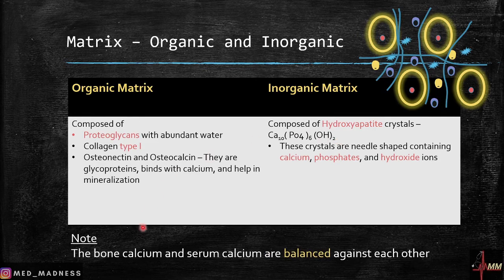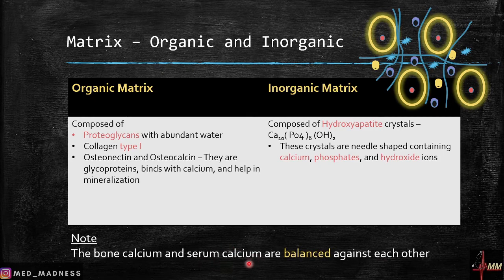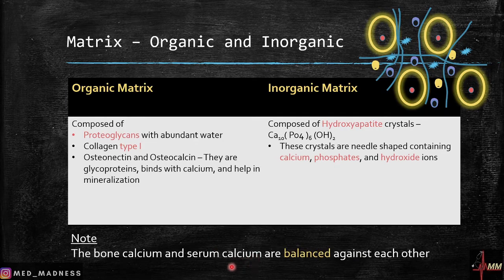One important point: bone calcium and serum calcium are balanced against each other. For example, if serum calcium is very low, the bone gets eroded and calcium from the bones goes into the serum to maintain serum calcium levels. The vice versa is also true — if there is excess calcium in the serum, it gets deposited in the bone, helping in bone formation.